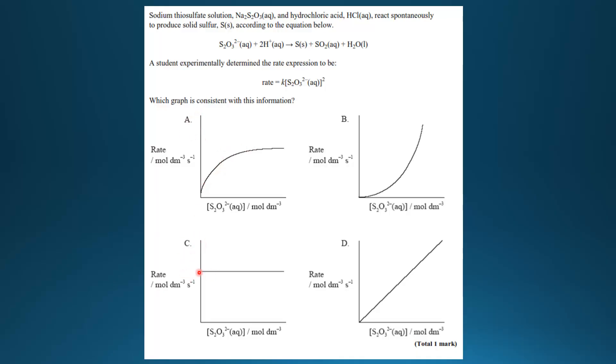C, we've seen this kind of graph before, this is a zero-order reaction. D, this is a first-order reaction. And B, this is a second-order reaction. So because overall this is a second-order reaction, the correct answer is B.